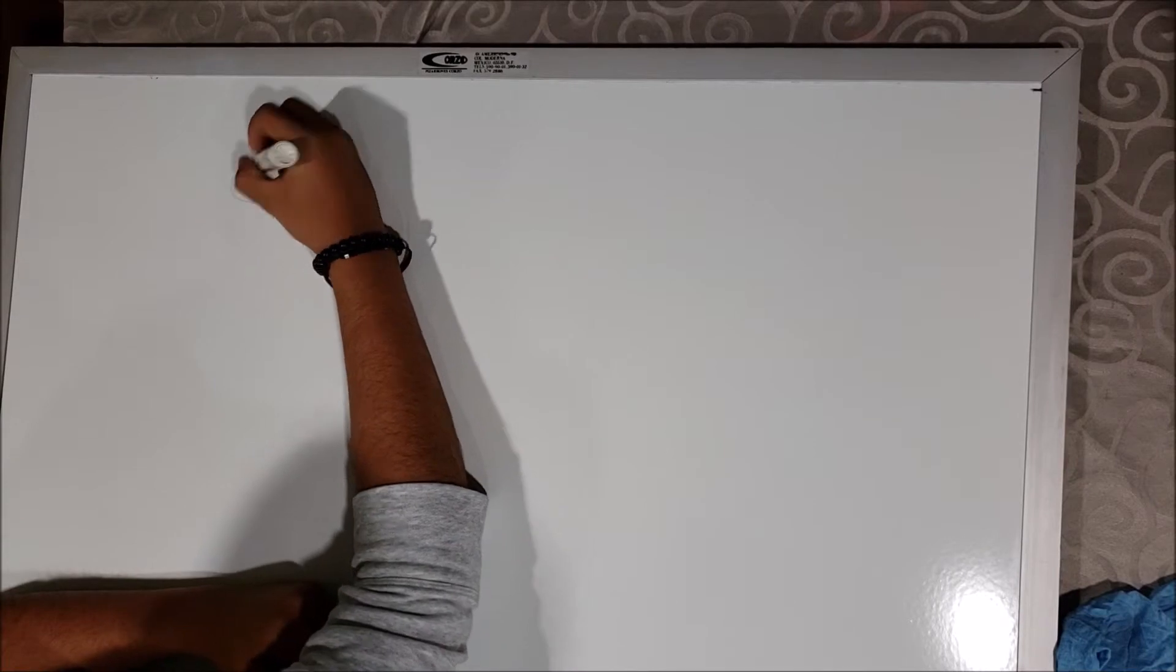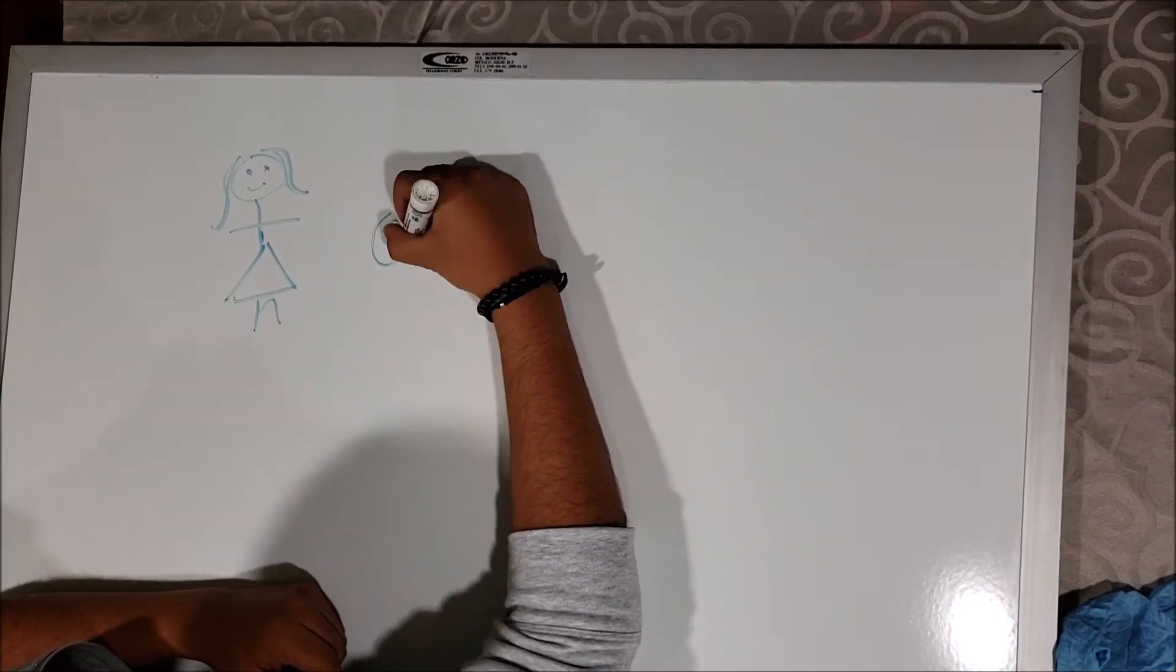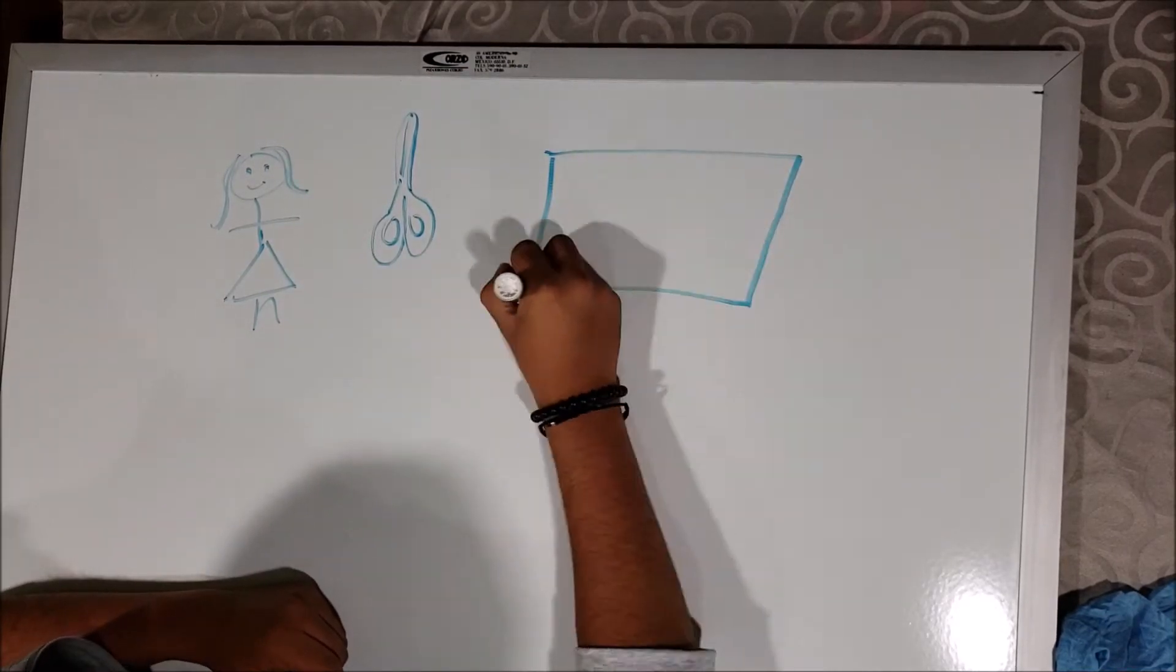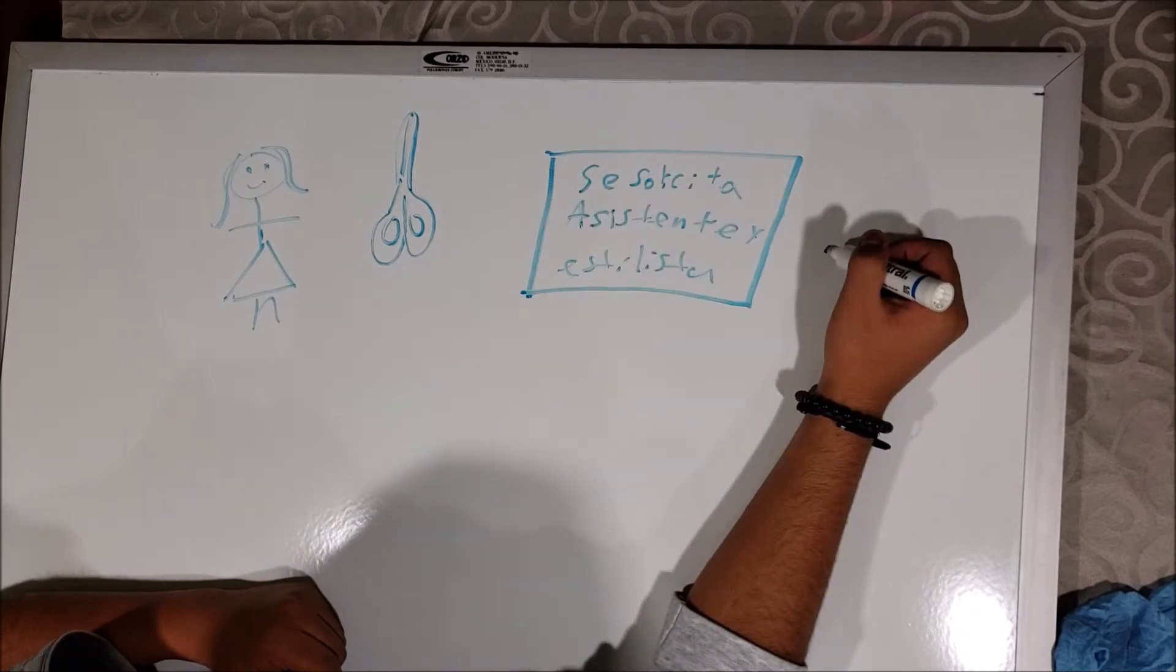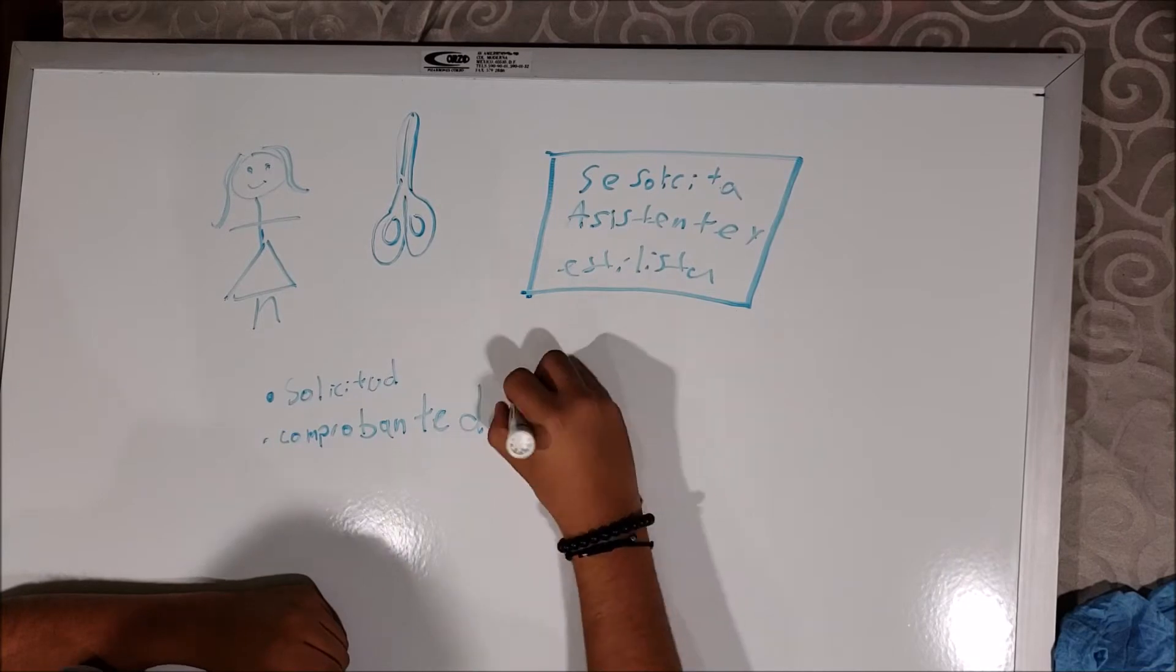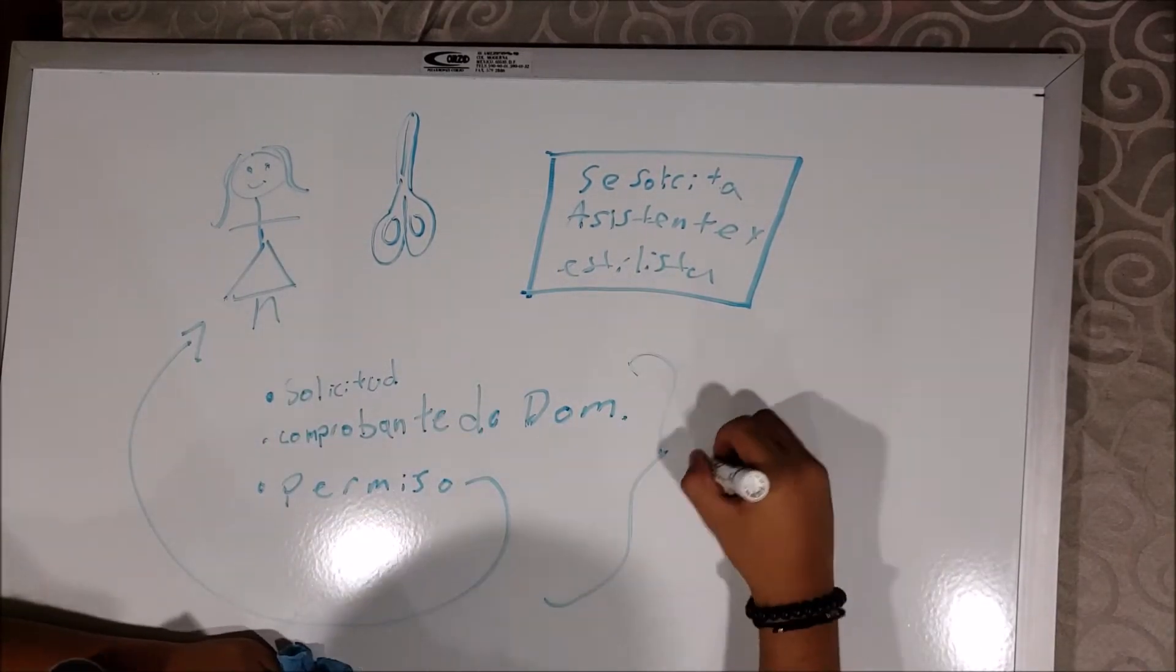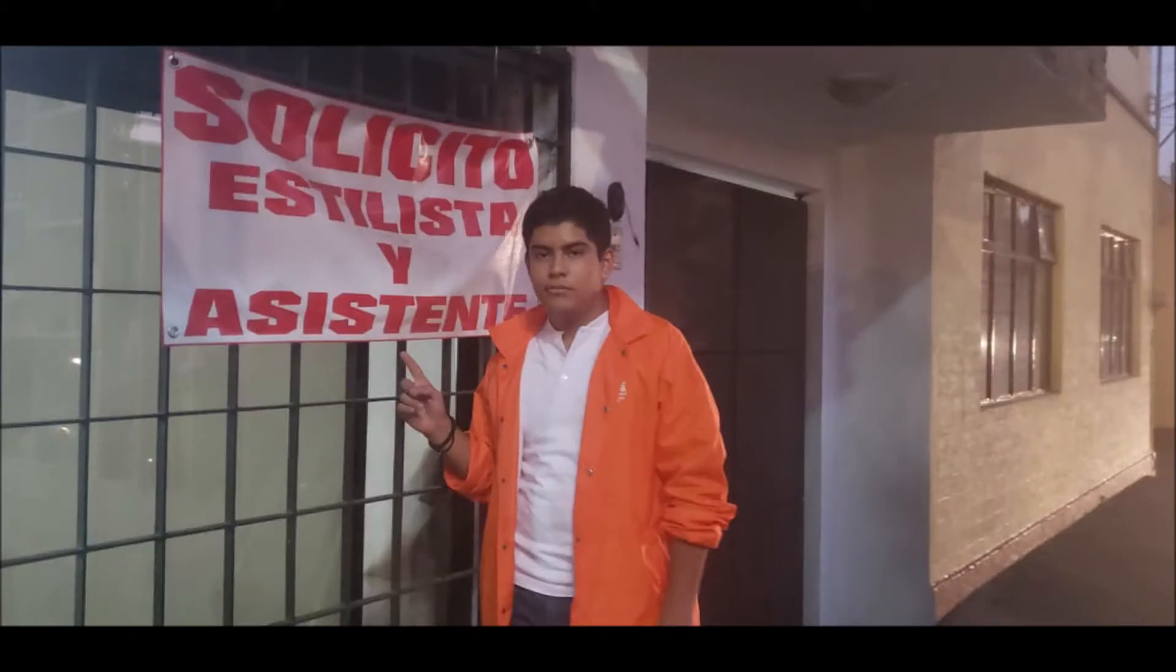El primer trabajo lo obtuvimos cuando mi mamá se fue a cortar el cabello. En la estética, requerían un ayudante general y después de una entrevista y entregar los documentos necesarios, los cuales eran la solicitud de empleo, un comprobante de domicilio y una carta donde mi mamá me daba permiso de trabajar ahí, logramos tener el primer empleo.